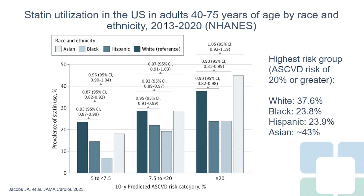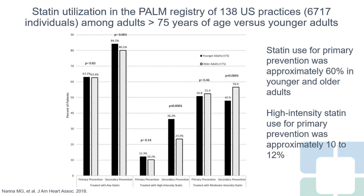When we look at statin utilization in the United States in adults between the ages of 40 and 75, even in the highest ASCVD risk category — greater than 20% — statin initiation for primary prevention lags. For certain groups, African-American patients: 23%, Hispanic patients: 23%. Overall, when we look at the prevalence of statin use, less than 50% — here on our y-axis. Statin use for primary prevention in younger and older adults based on the PALM registry was approximately 60%, but the prescription of high-intensity statins for primary prevention is much lower, at 10 to 12%. Interestingly, older adults were less likely to be prescribed high-intensity statins for secondary prevention.